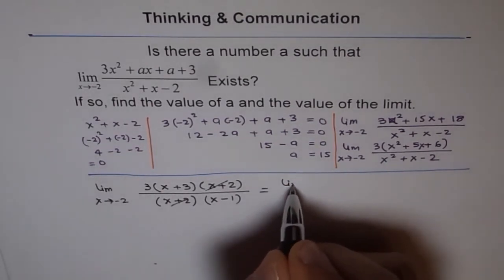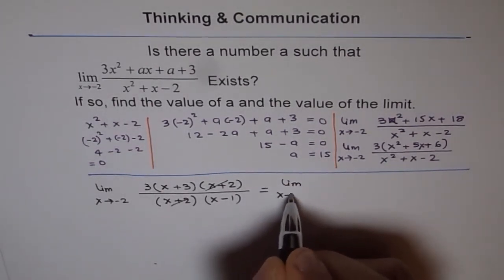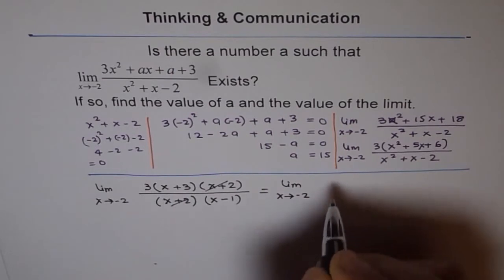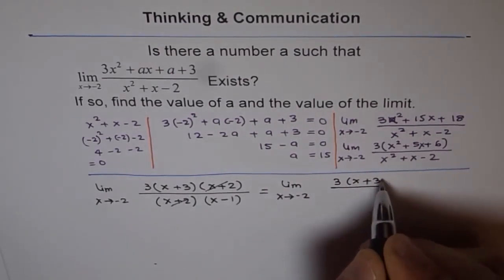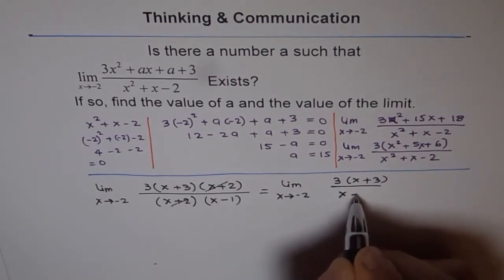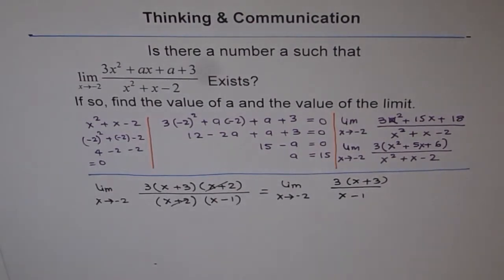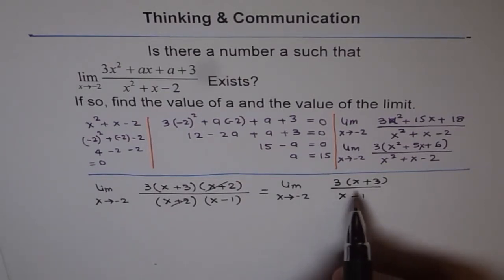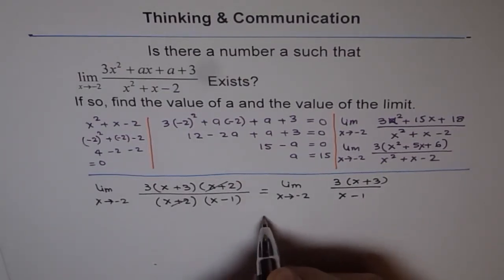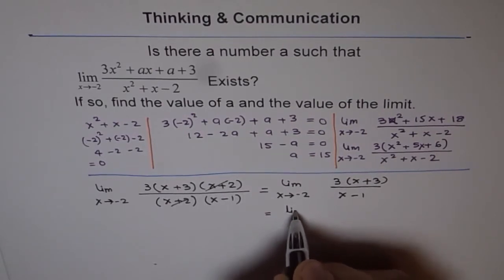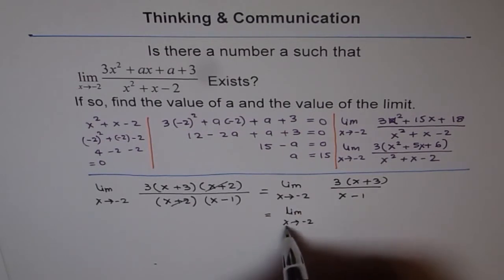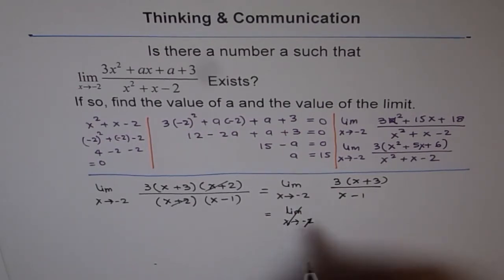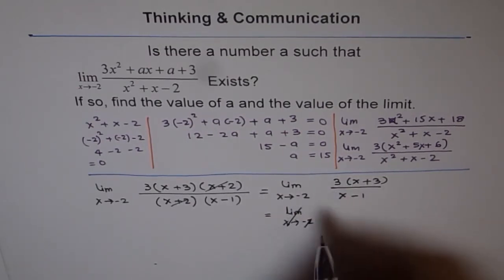So, this can be simplified as limit x approaches minus 2. We have 3 times x plus 3 over x minus 1. So, that is what we get. And now, we can substitute x as minus 2 and find our answer. When we substitute we need not write this. I am just substituting the value minus 2 here.